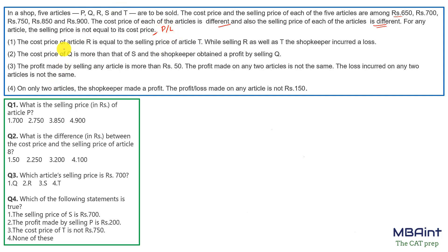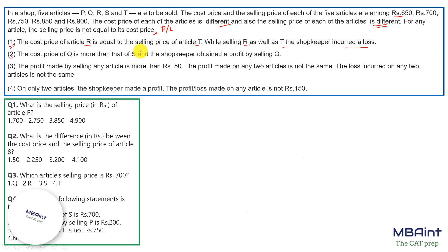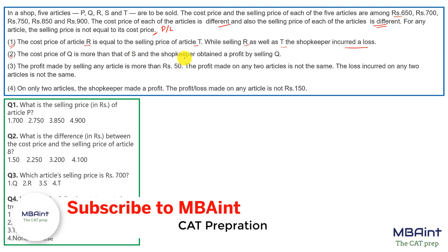The first clue says the cost price of article R is equal to the selling price of article T, while selling R as well as T the shopkeeper incurred a loss. The second clue says the cost price of Q is more than that of S, and the shopkeeper obtained a profit by selling Q.